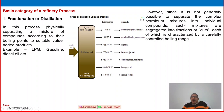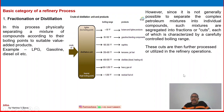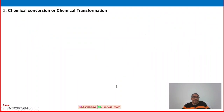Since it is not generally possible to separate complex petroleum mixtures into individual compounds, such mixtures are segregated into fractions or cuts — that is why it is called fractional distillation. Each fraction is characterized by a carefully controlled boiling range. That's why refinery process is considered a complex process. These cuts are then further processed or utilized in refinery operation, used for various advanced conversion or reforming processes to produce value-added products at international standards.